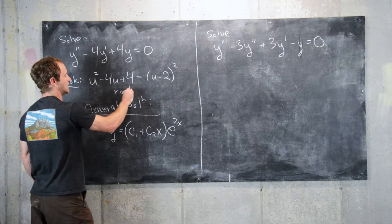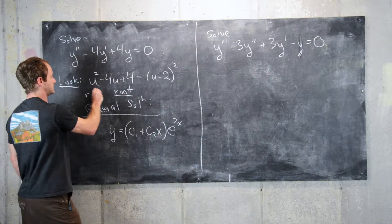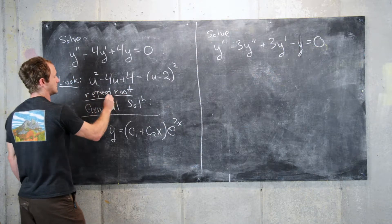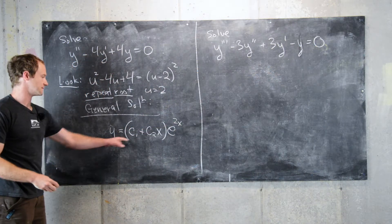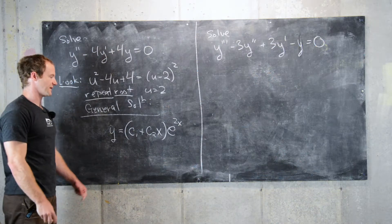because here we had a repeated root of u equals 2, so that shows up in the exponential. And then the other function is given by this linear function.